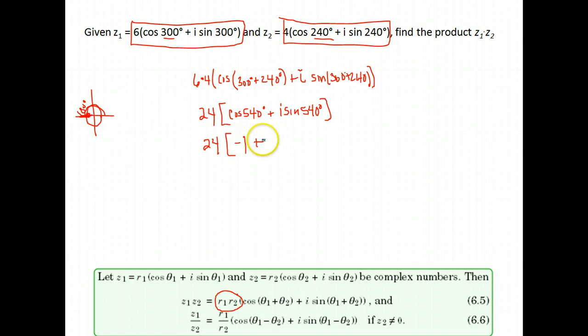Plus i times the sine of 540. The sine of 540 is 0. You could also use exact values since 540 is once around the circle and then to 180 degrees, and the sine of 180 we know is 0. So we have 24 times negative 1 which is negative 24. Our answer to this problem is just plain old negative 24.